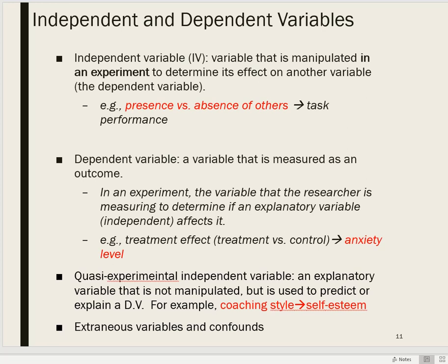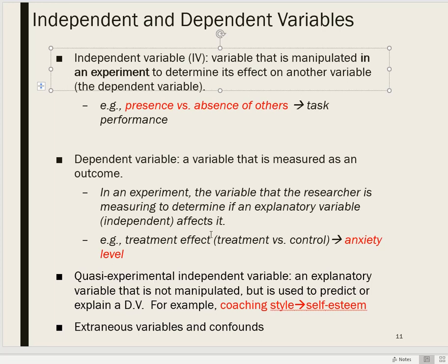The terms independent variable and dependent variable — some people will reserve them strictly for experimental designs, whereas other people may use these terms more loosely, using independent variable to mean any sort of explanatory variable and dependent variable to mean any sort of outcome variable. There is another in-between type called a quasi-experimental independent variable, which is an explanatory variable that is not necessarily manipulated, or in some cases it can be manipulated but it's not feasible to do so in the context of the study, and it's measured and used to predict or assess the relationship between it and the outcome variable.